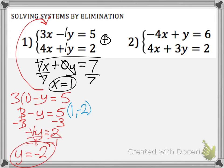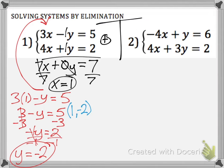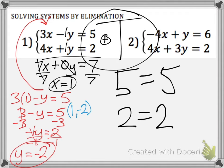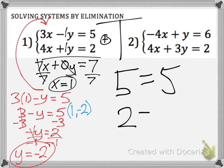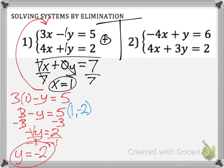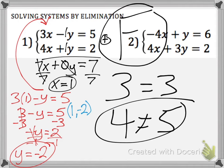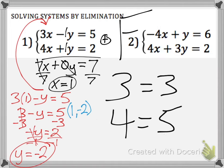Keep in mind: your solution means that plugging those x and y values into both equations produces true statements like 5 equals 5. If a coordinate is not a solution, at least one equation will produce a false statement, such as 4 equals 5. If both equations produce false statements for a coordinate, it is definitely not a solution to the system.